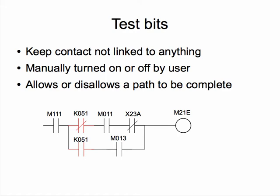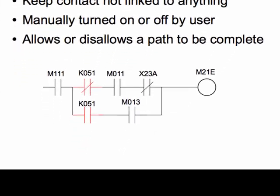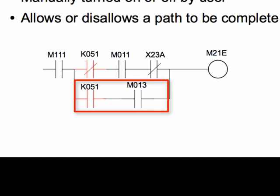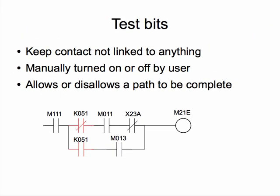Lastly, let's talk about test bits. They are basically keep contacts inside the program controlled by the user — turned on or off manually. They stay that way even when the control panel is restarted because they are keep contacts. Using the same example, I could only allow one of the logic conditions to possibly be completed. Here, we added K051 as the test bit. As long as we keep it off, only the upper logic can be met. When we turn the test bit on, only the lower logic can be met. This is very useful when adding new lines of code. All the new code can be kept behind a test bit. We can turn the test bit on to trial the new lines of code, and if there is any issue, we can just turn it off. In the manufacturing world, this is critical in order to avoid production downtime.